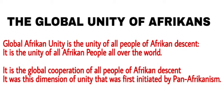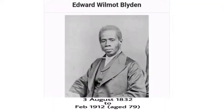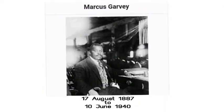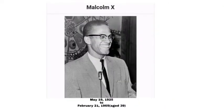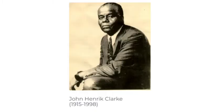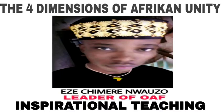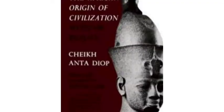It is the global African unity — the first dimension of African unity — that gave birth to Pan-Africanism. It was the global unity of all Africans that gave rise to great stars like Edward Blyden, Marcus Garvey, Malcolm X, and a host of other Pan-African leaders and scholars worthy of great honor. Global African unity touches the plight of all Africans all over the world while protecting and defending Africa as the homeland of all Africans and the origin of world civilization.